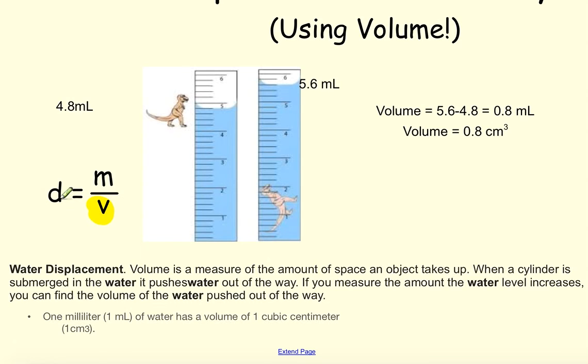If I'm trying to find the density, the other thing I need to know before I can find that, you guessed it, is the mass. If you haven't weighed your object yet, go ahead and weigh your object, this dinosaur. And then you would simply need to divide mass divided by the volume, which we just calculated using water displacement.